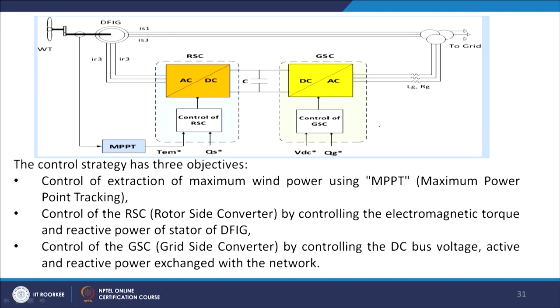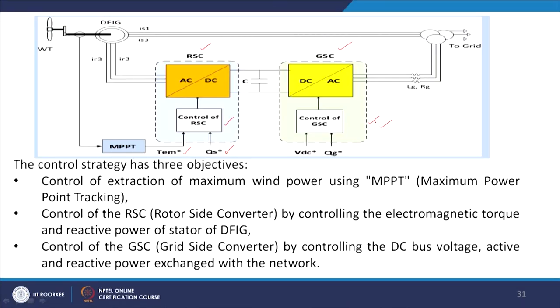We have already discussed the variable speed DFIG system. We have the rotor side converter and grid side converter. The control strategy for the rotor side converter takes as input the reactive power Q and the electromechanical torque TEM — because we need to control the rotor speed. For the grid side converter the inputs are the grid side reactive power, the DC link voltage VDC, and the MPPT signal.